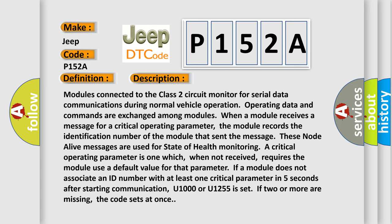If a module does not associate an ID number with at least one critical parameter in five seconds after starting communication, U1000 or U1255 is set. If two or more are missing, the code sets at once.